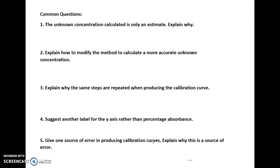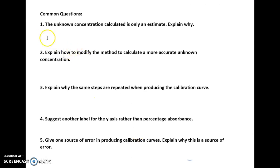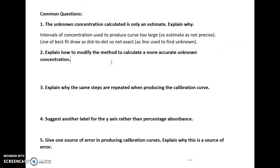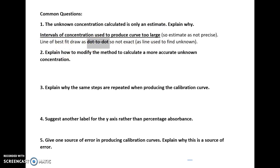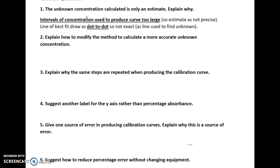So common questions that they can ask. Number one, the unknown concentration calculated is only an estimate. Explain why. And that's because the intervals that we use to produce the curve are too large, therefore it's not precise enough. And our line of best fit or our curve is dot-to-dot, therefore that's not exact. So intervals generally are too large. So the intervals used to produce concentration are too large, or we did a dot-to-dot graph, and that's not that exact. The dot-to-dot is a consequence of the intervals.